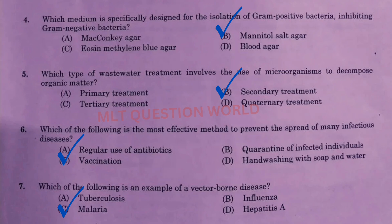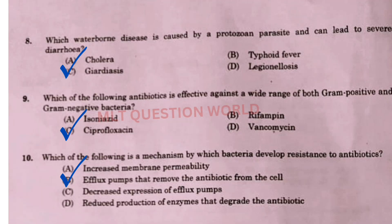Question number 5: Which type of wastewater treatment involves the use of microorganisms to decompose organic matter? The right answer is option B. Question number 6: Which of the following is the most effective method to prevent the spread of many infectious diseases? The right answer is vaccination. Next question: Which of the following is an example of vector-borne disease? The right answer is option C, Malaria.